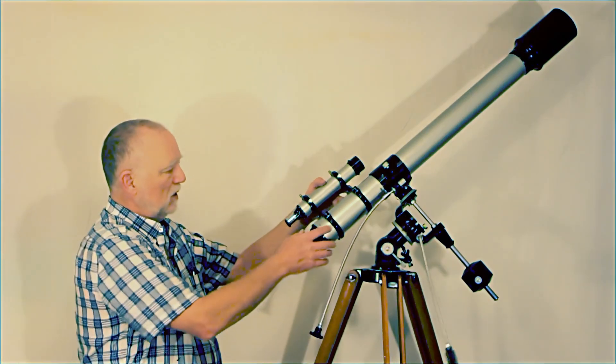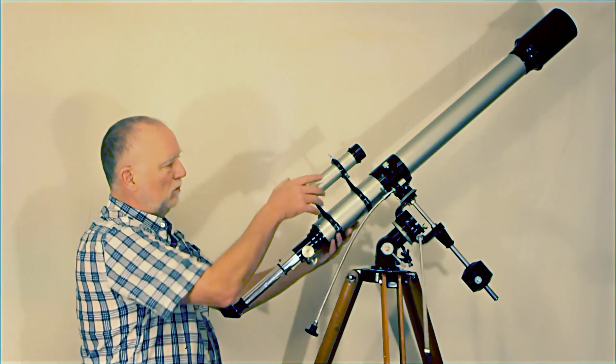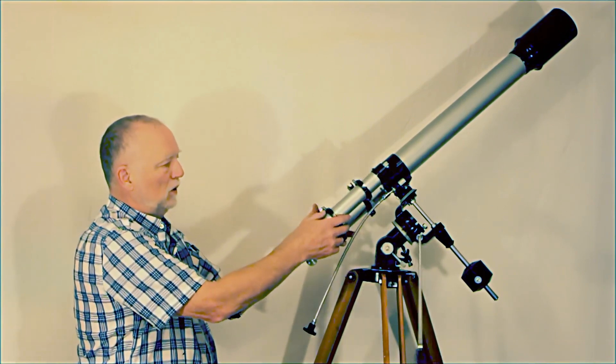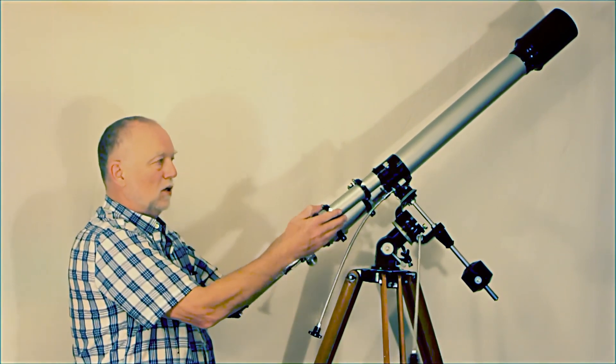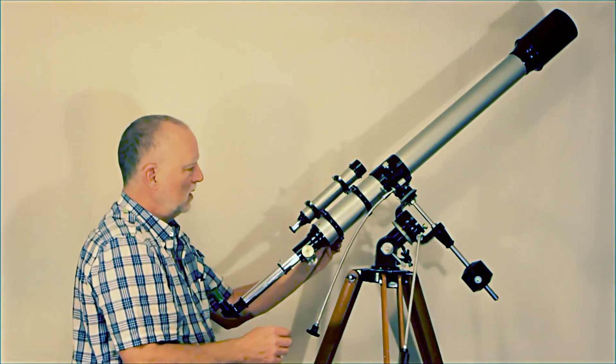The finder is on finder rings, so this makes it very nice. You can move the finder around to different sides of the telescope depending on where you are in the sky. So that's a nice feature.